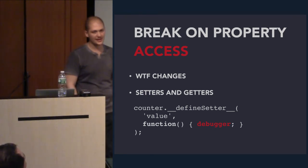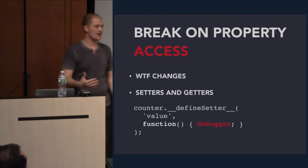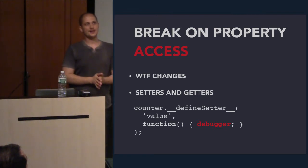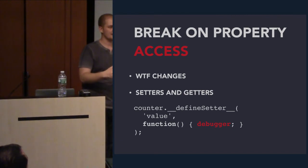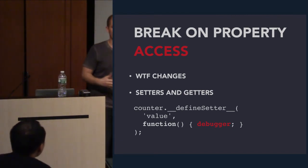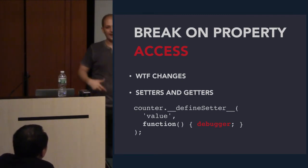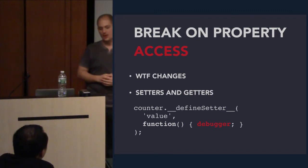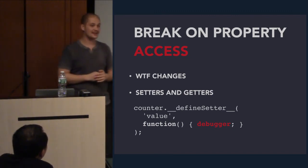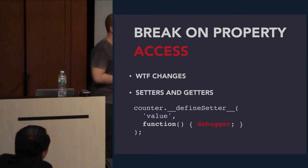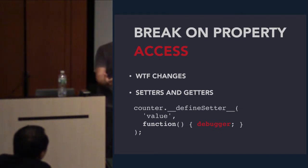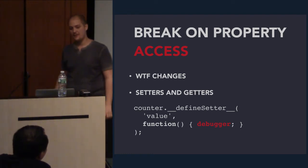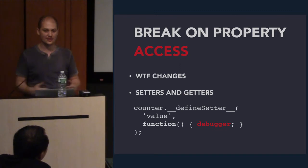Another one is breaking on property access. A lot of times you're step-debugging and suddenly you find one of your variables or a property on your object is changing from under your feet and you don't know what changed it. Unlike methods, we can't just replace it with a function. But what you can do is add setters and getters. Inside the setter, just have a debugger statement. Next time something tries to set that property on your object, you'll get a breakpoint and be able to find out what's trying to change your variables.